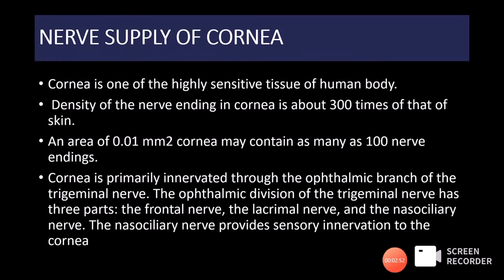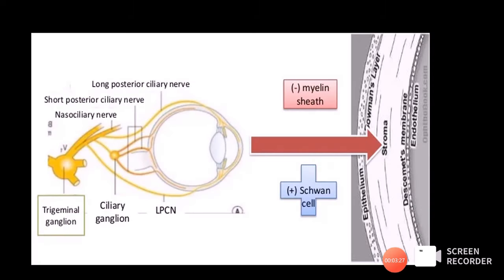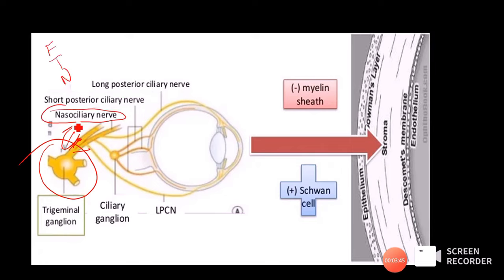The cornea is the most sensitive tissue in the human body — about 300 times more sensitive and with greater nerve density than the skin. It is innervated by the ophthalmic branch of the trigeminal nerve. The ophthalmic division has three parts: frontal, lacrimal, and nasociliary. It is the nasociliary nerve that provides sensory innervation to the cornea, via the long posterior ciliary nerve, which travels along the eyeball, pierces the sclera, and arrives at the limbus.